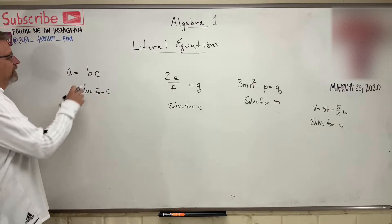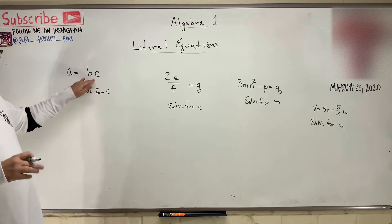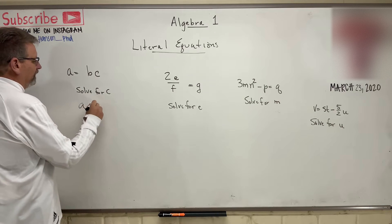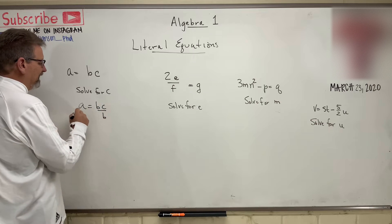We're looking for C here. So, we want to get C all by himself. Well, I've got a B multiplied by me. So, well, this is easy, isn't it? B times C. Then just divide both sides by B, right?